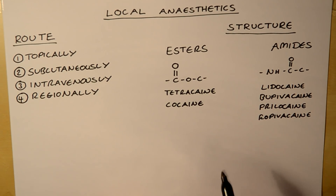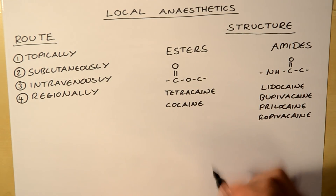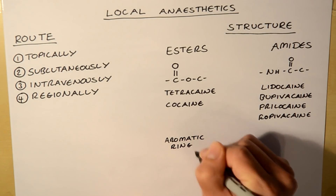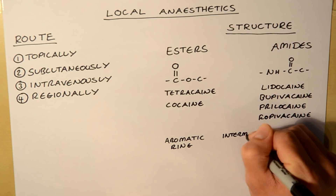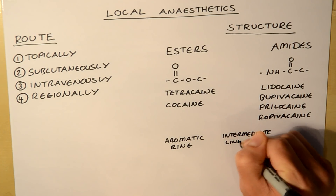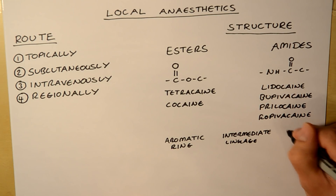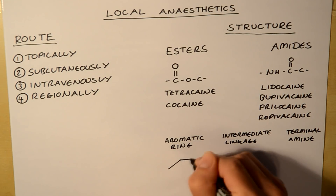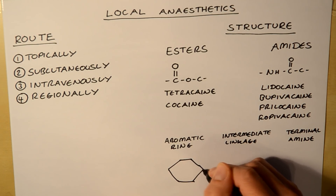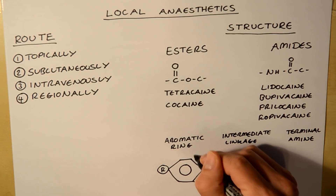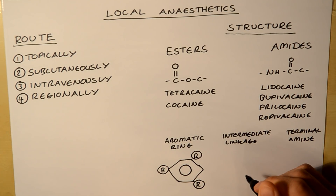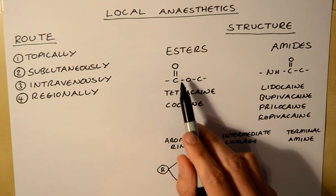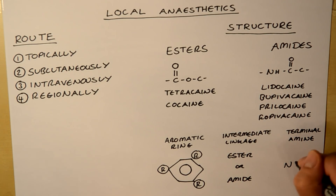When we look at their actual structure, you can see there are two similar portions and the ester or amide portion. Firstly, you've got the aromatic ring, then the intermediate linkage — which is either ester or amide — and then the terminal amine, which is N and R.